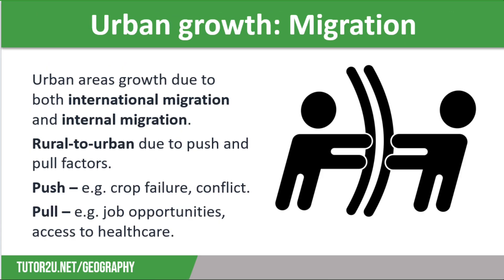So why does urbanisation happen? The first reason is migration. Urban areas may grow because people move from other countries — which is international migration — or they may move from other places in the same country, which we call internal migration. When people move to towns and cities from rural areas or the countryside, it is known as rural to urban migration, and it is the result of push and pull factors.